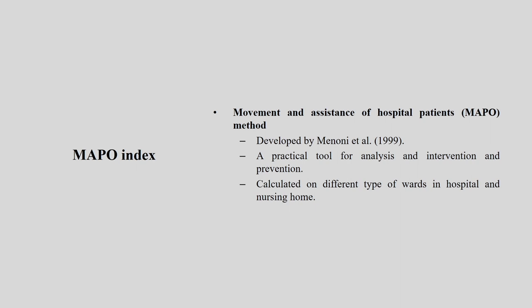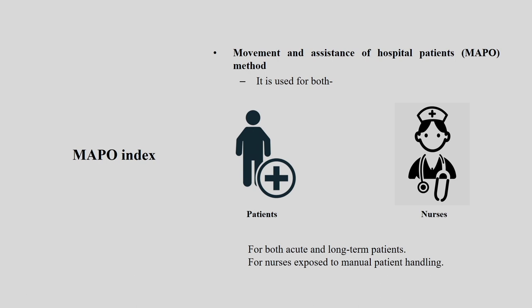Based on the type of ward, based on the number of beds it has in a particular ward, and what type of nursing home or hospital it is — based on that, this index will change and direct the observer or intervention person to do the intervention. The MAPO method is used for both patients and for caregivers or hospital nursing staff, for both acute and long-term patients, and for nurses exposed to manual patient handling. For all these cases we can use the MAPO index.